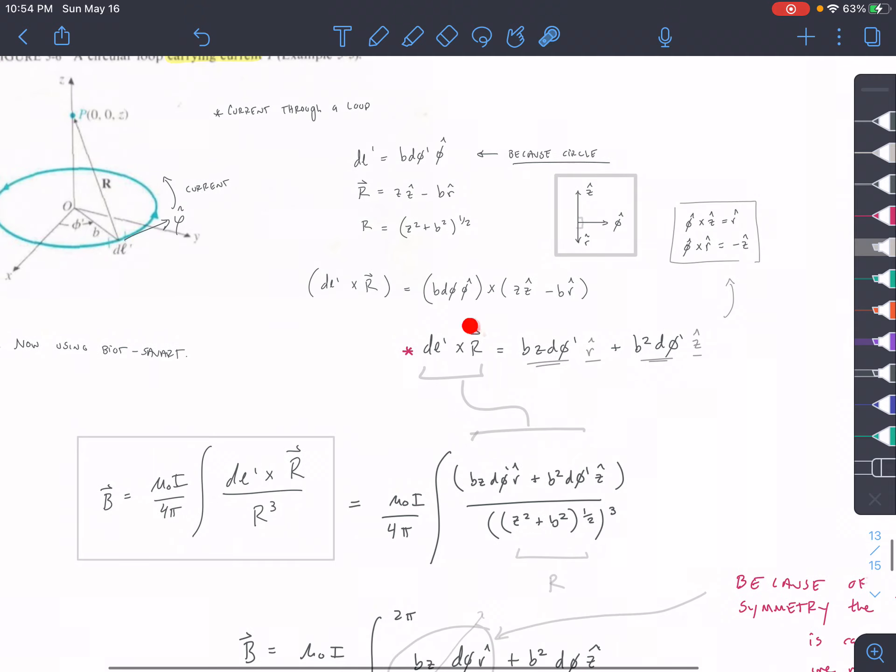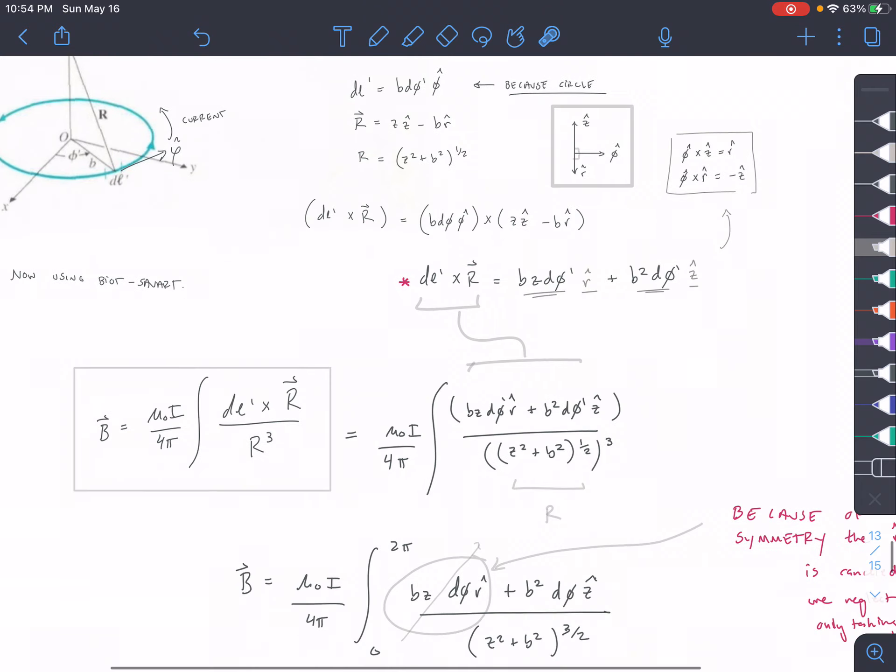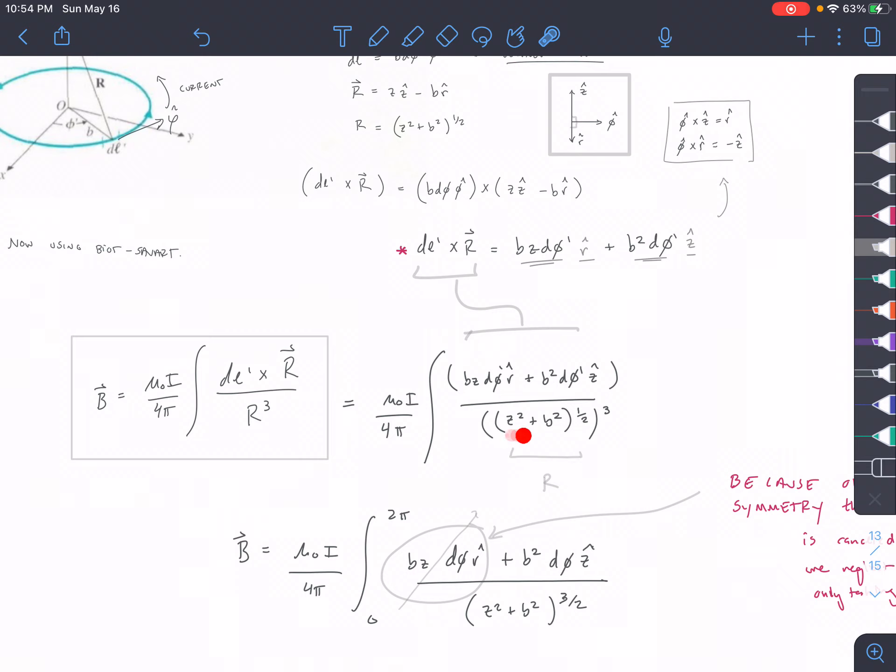Okay. So we found dL cross R, just because it was this top part of this equation, and then we're going to plug it in here. And then we're plugging in our R value. So this guy to the one-half cubed, essentially.